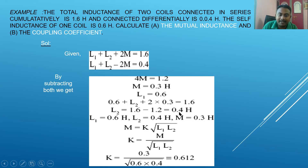Now we know L1 = 0.6 H, L2 = 0.4 H, and M = 0.3 H. Using the formula k = M / √(L1 × L2), substituting these values gives k = 0.612. This is one kind of problem where given values lead us to mutual inductance and coefficient of coupling.